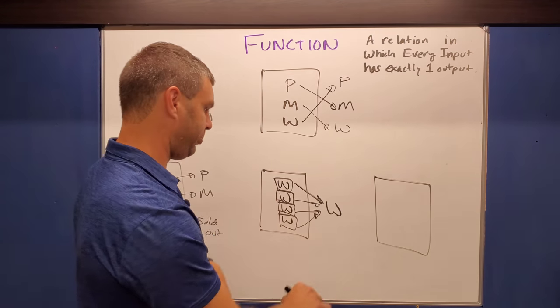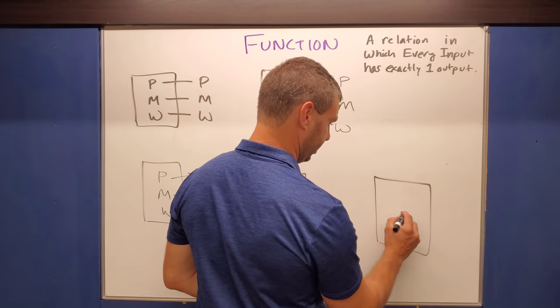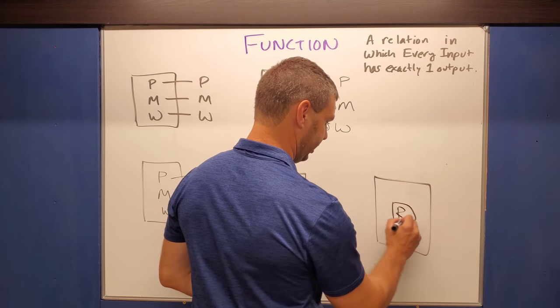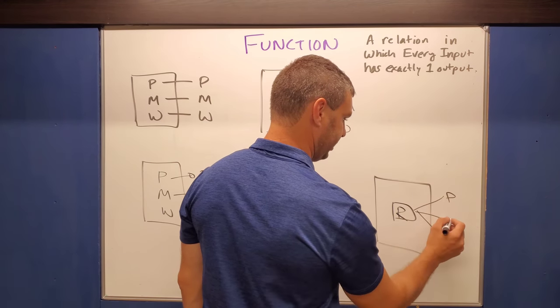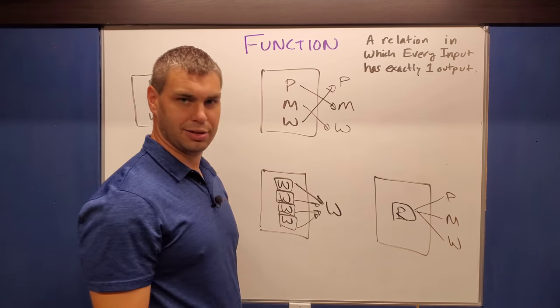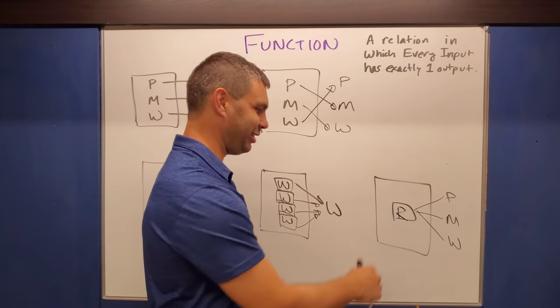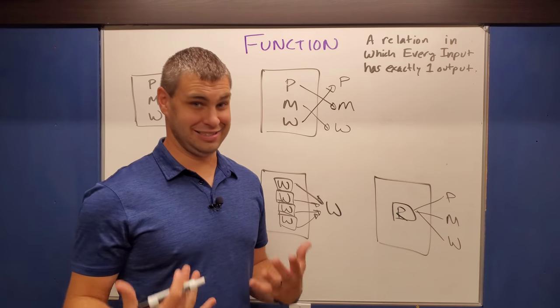All right. And then the last one's going to be kind of the opposite. What if there was just one button? I'll say R here and I'll tell you why in a second, but let's say it goes to either a Pepsi, Mountain Dew, or a water. The R may be for random, right? So if you hit the R, the random button, is this a function?